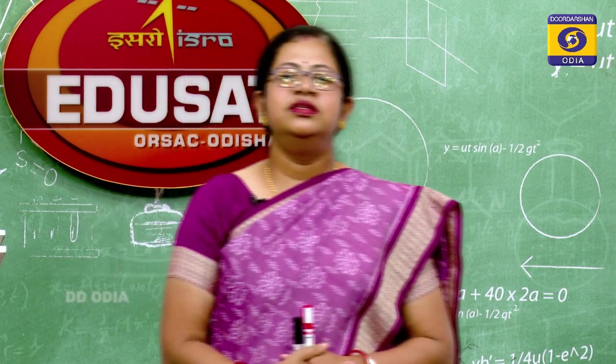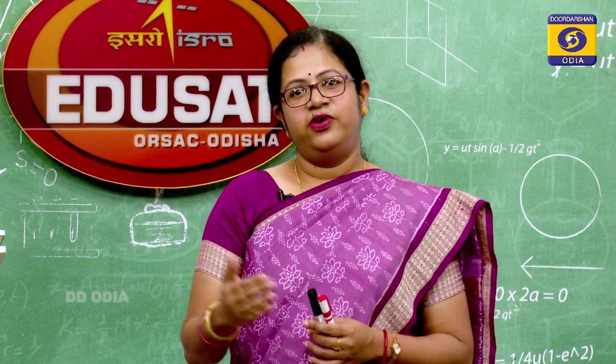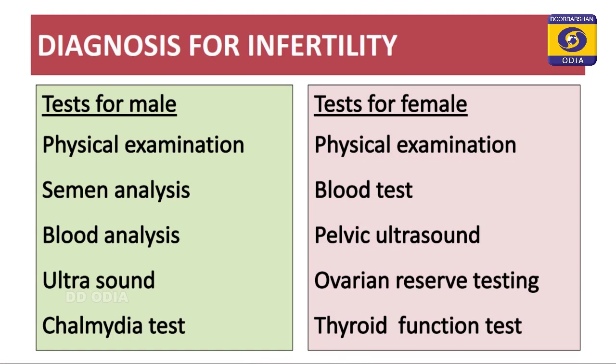Now let us come to the diagnosis for infertility. Knowing the factors for male and female infertility, we refer certain tests for diagnosis. For males, it is advised to undergo physical examination, semen analysis — checking normal concentration, colour, odour, and pH — blood analysis for hormone levels, ultrasound to detect anatomical disorientations in the ductal or testicular parts, and an STD or chlamydia test to confirm if a sexually transmitted disease is present.